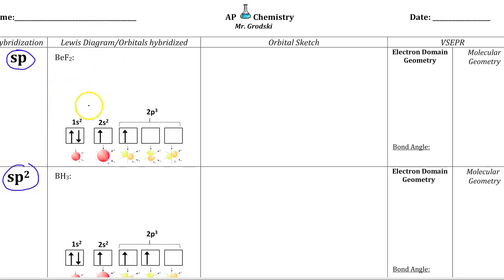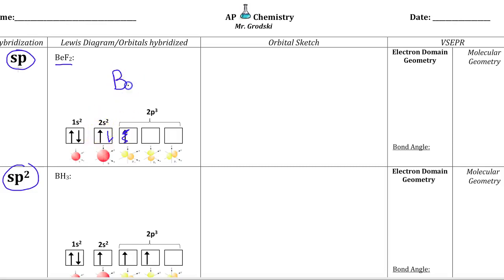If we do a Lewis dot diagram, we see that beryllium is 1s2, 2s2. We have an issue here because it doesn't have any partially filled orbitals. What's weird about beryllium is that you think it's a metal, but it undergoes some covalent bonding. Beryllium has two valence electrons, and we split them up. Fluorine has seven valence electrons because it's 1s2, 2s2, 2p5 — seven valence electrons.